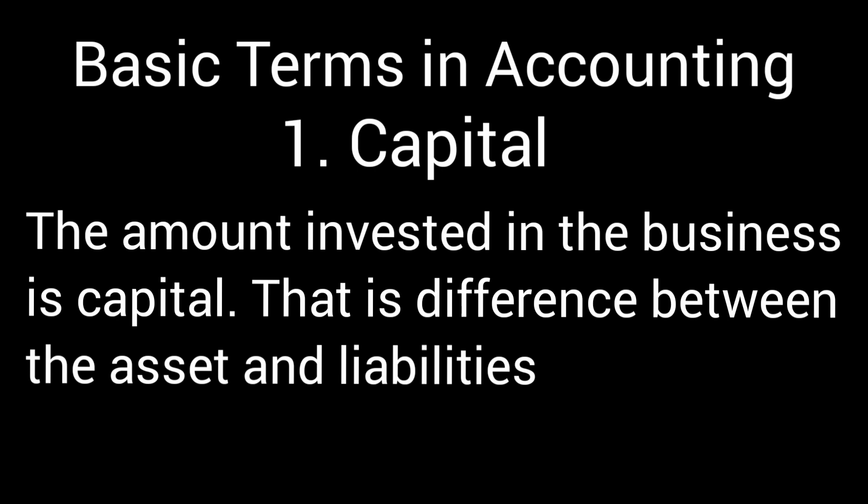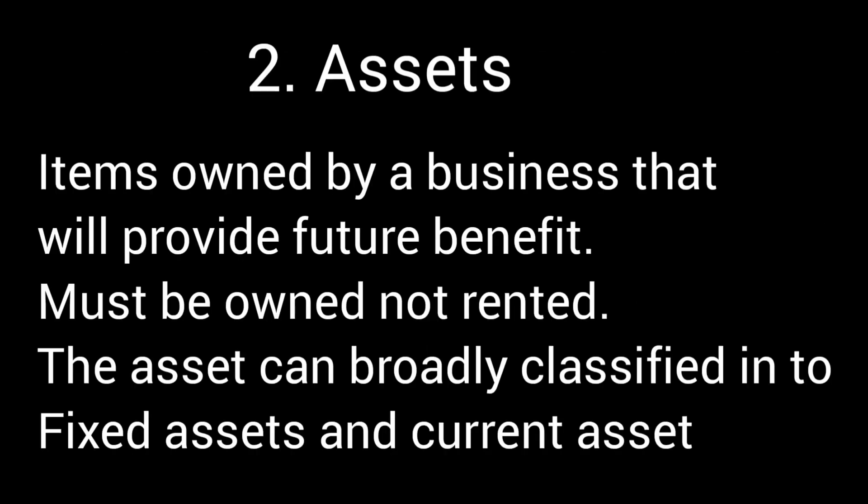The next important term is asset. Asset means items owned by a business that will provide future benefit. The asset must be owned, not rented. Examples of assets include furniture, land, building, computer, AC, and the shop. Assets can be broadly classified into fixed assets and current assets.